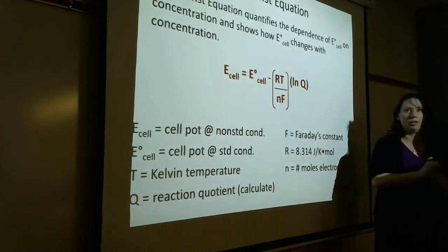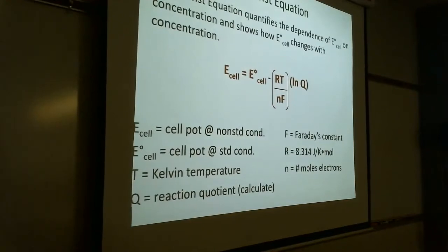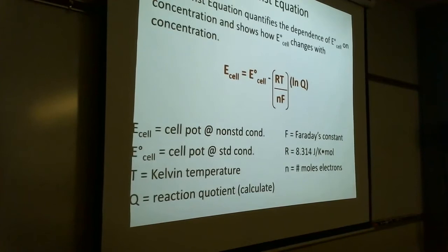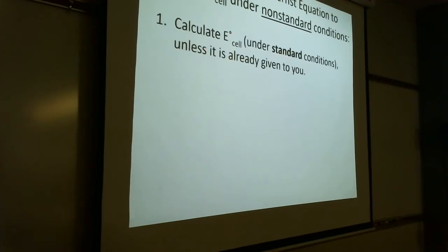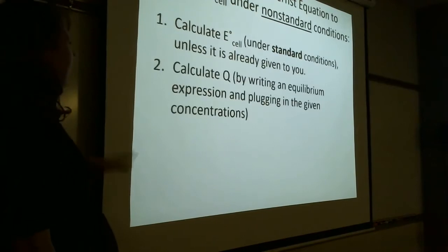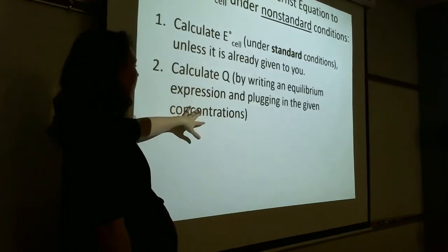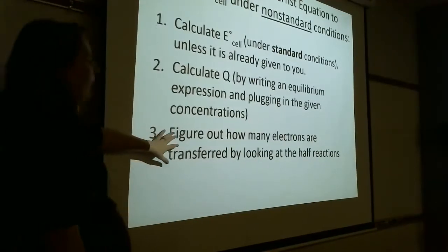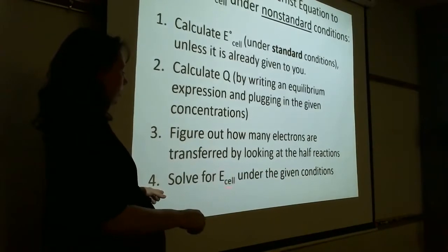Here's the process: calculate E°cell under standard conditions unless it's given to you; calculate Q by writing the equilibrium expression with products over reactants, raising concentrations to coefficient powers, and omitting solids and liquids; then figure out how many electrons are transferred by looking at the half reactions; and finally solve for E-cell under non-standard conditions.